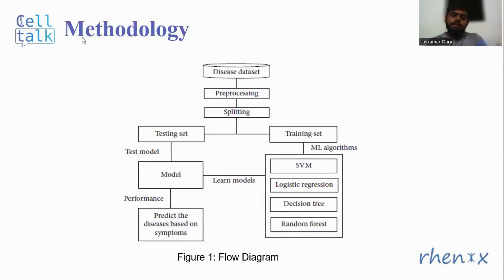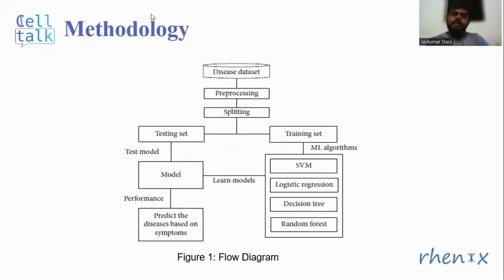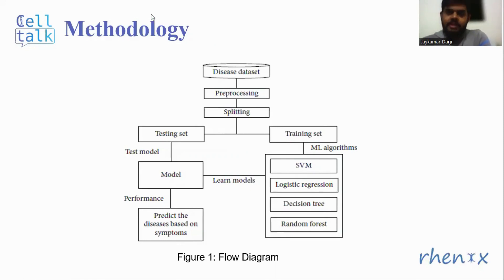Regarding the method: here you can see the flow diagram of the entire experiment. The first step is to acquire the dataset, then to preprocess it. After preprocessing is done, they have split the entire dataset into an 80-20 split, from which 80% of the data will be used for training the machine learning algorithms and the rest will be used for testing those models.